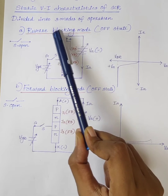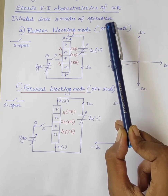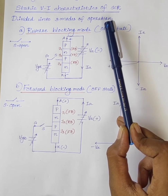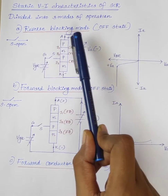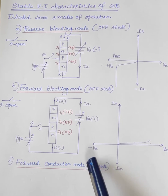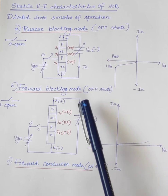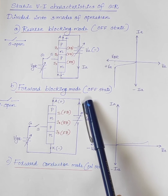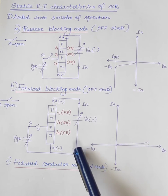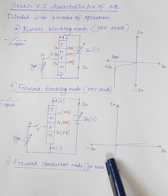The static VI characteristics of SCR is divided into three modes of operation: reverse blocking mode, forward blocking mode, and forward conduction mode. Reverse blocking mode and forward blocking mode mean the switch is in the off state. Forward conduction mode means the switch is in the on state.